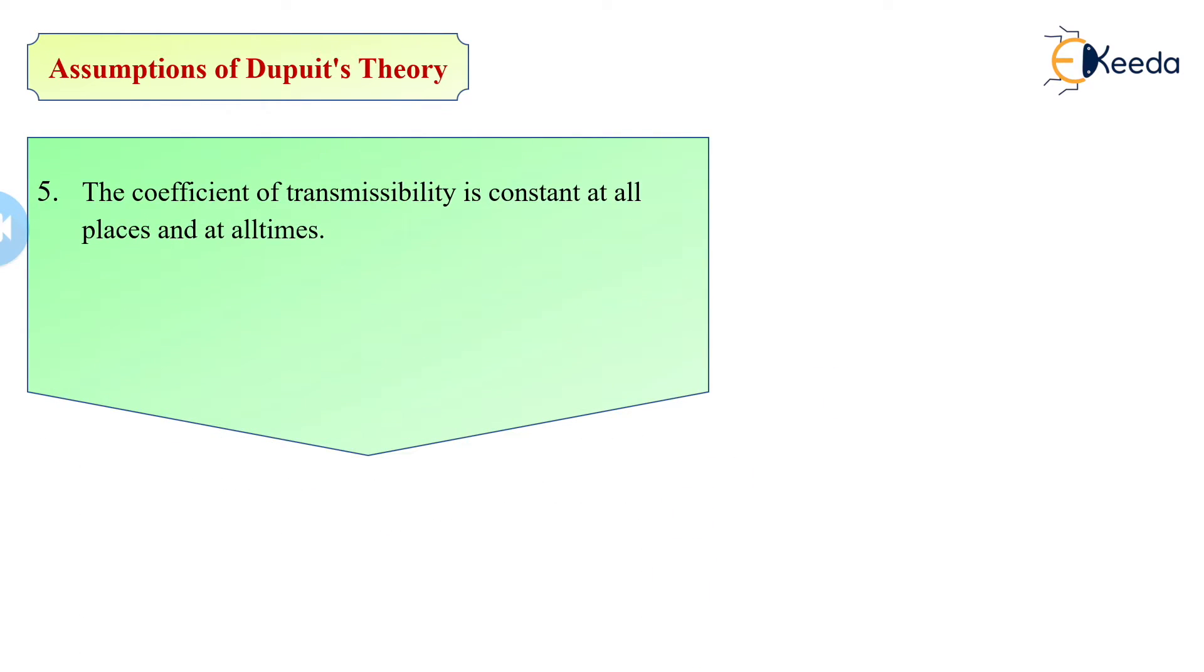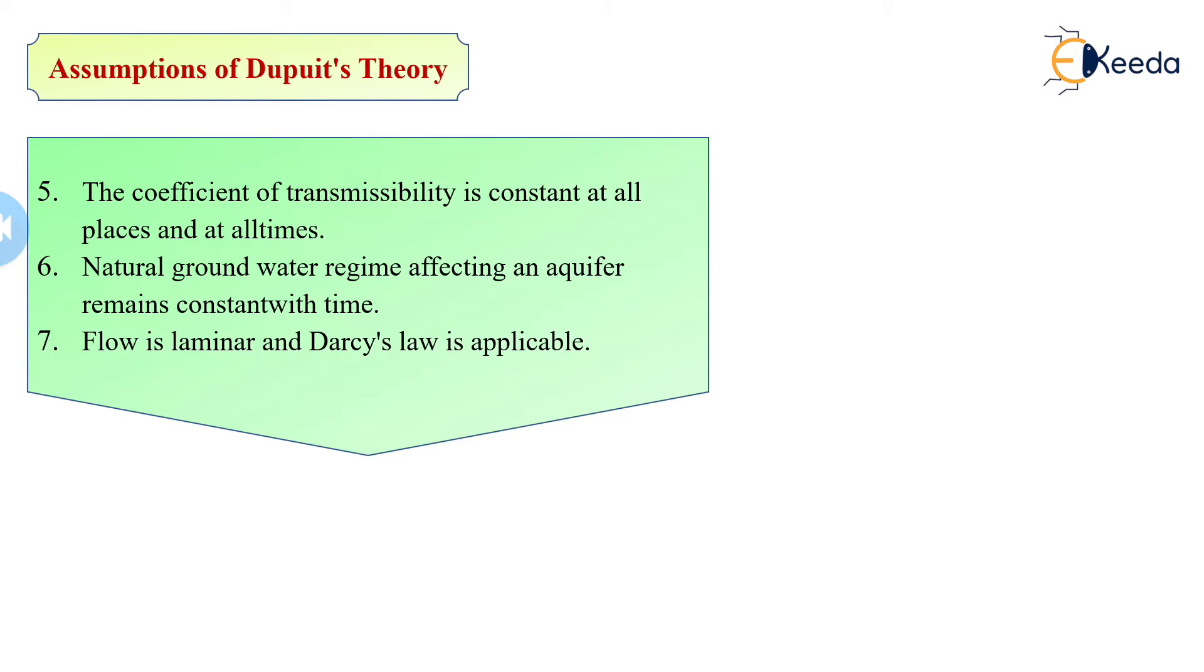The coefficient of permeability is constant at all places and at all times. Natural groundwater regime affecting an aquifer remains constant with time. And flow is laminar as well as Darcy's law is applicable.